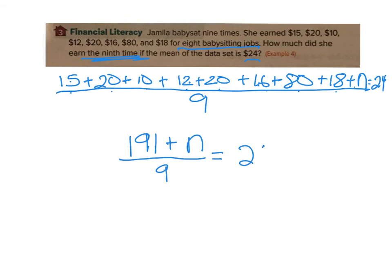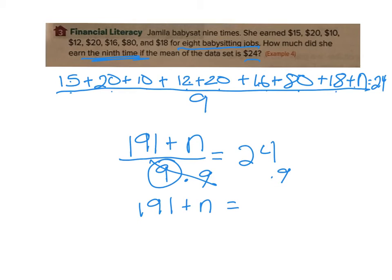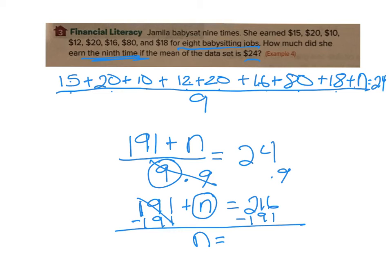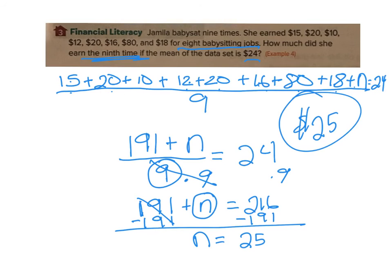I want to get rid of the 9, so since it's divided by 9 I multiply both sides by 9. Those cancel, giving me: 191 plus n equals 24 times 9, which is 216. Now I want n by itself — I subtract 191 from both sides. That gives me n equals 216 minus 191, which equals 25. So on that ninth job she earned $25. You do it as an equation, solve it, and you're good to go.